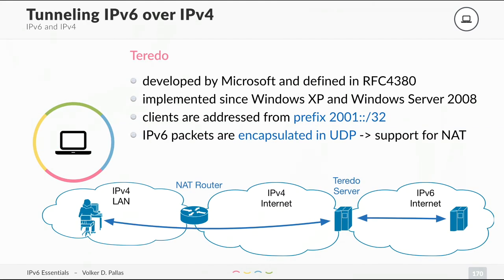Let's start with Teredo. It was developed by Microsoft and is defined in RFC 4380, implemented since Windows XP and Windows Server 2008. Clients are always addressed from prefix 2001::/32. With Teredo, IPv6 packets are encapsulated into UDP, so there is full NAT support. The Teredo server was run by Microsoft, and clients starting from Windows XP would automatically establish a tunnel to this server, which has a fixed IP address known to the operating system.